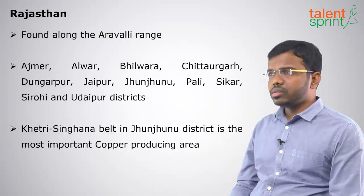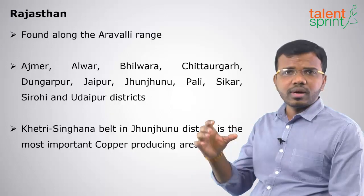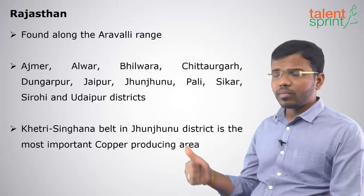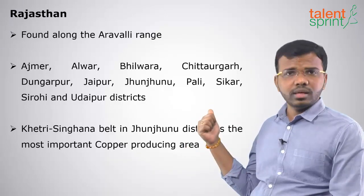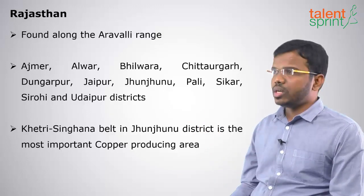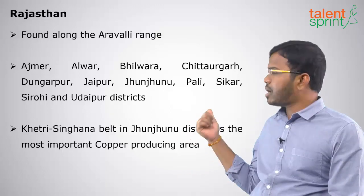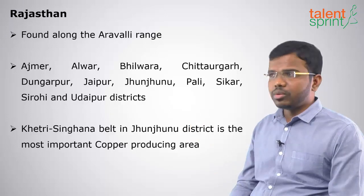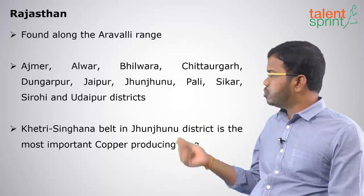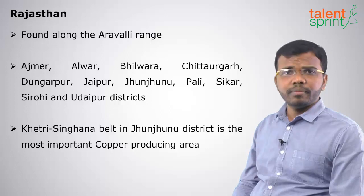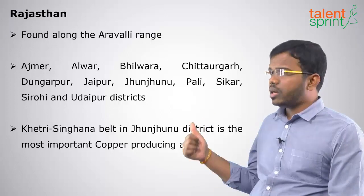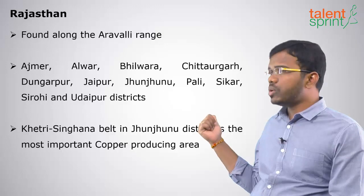In Rajasthan, copper is found along the Aravali range — the oldest mountains in India. Districts like Ajmer, Alwar, Bhilwara, Chittorgarh, Dungarpur, Jaipur, and Jhunjhunu are very famous for copper mines. Khetri and Singhana, located in Jhunjhunu district, are very important copper-producing areas in Rajasthan.